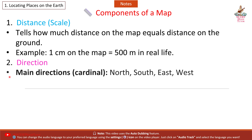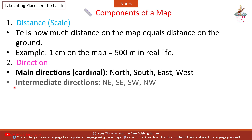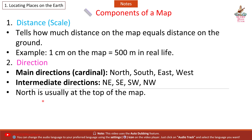Second, Direction. Main directions — Cardinal: North, South, East, West. Intermediate directions: Northeast, Southeast, Southwest, Northwest. North is usually at the top of the map.